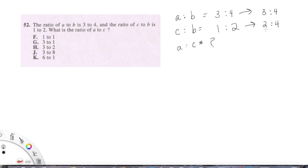Now we can easily compare A and C. For every 3A, we have 4B. For every 2C, we have 4B. So we could say A to C is 3 to 2. So this is the idea of thinking about it as a common denominator sort of method.